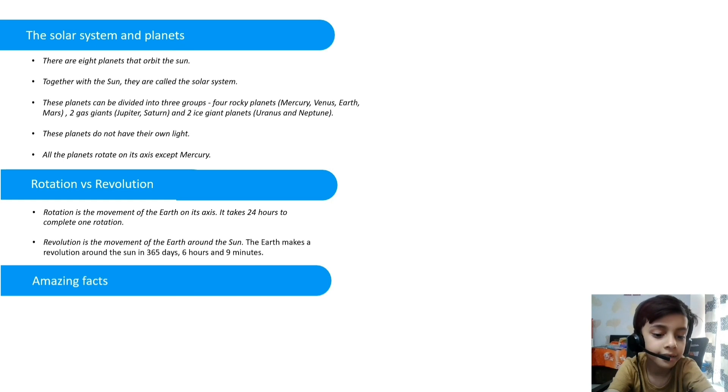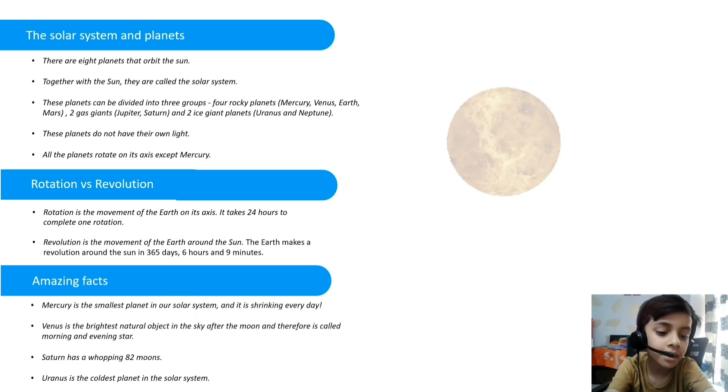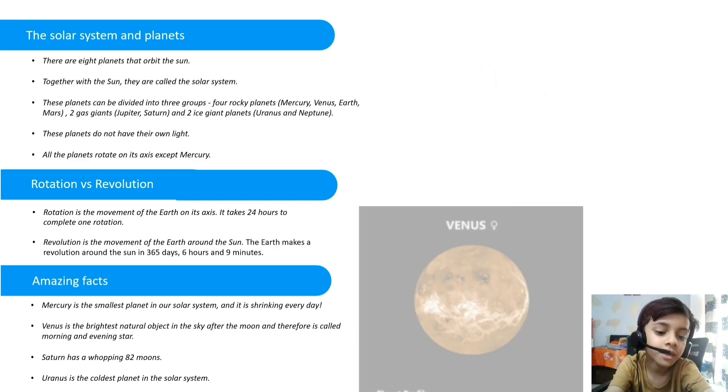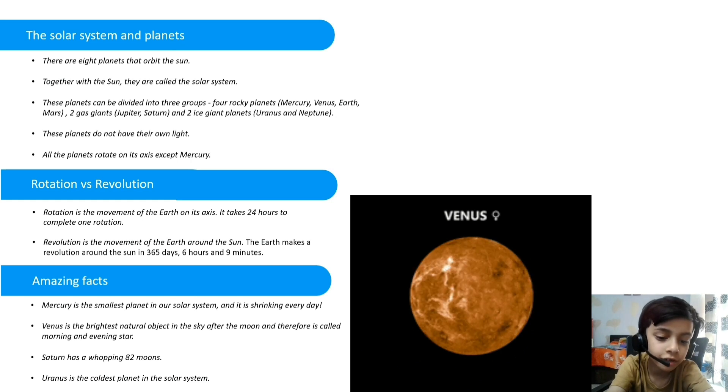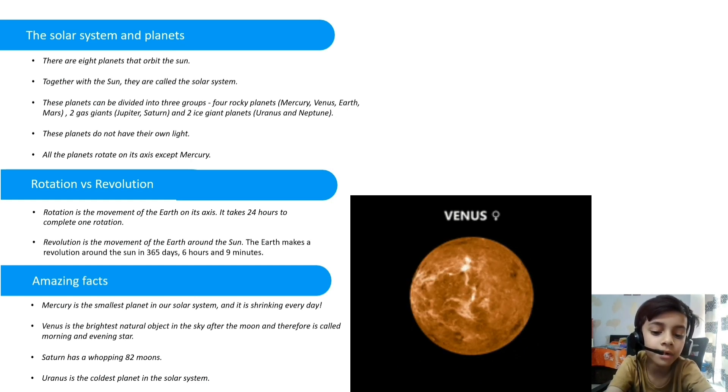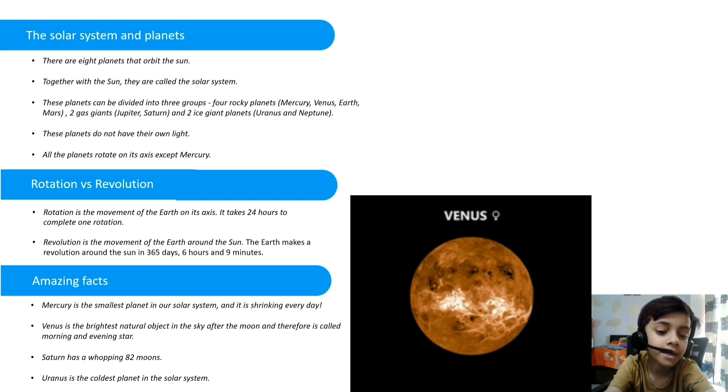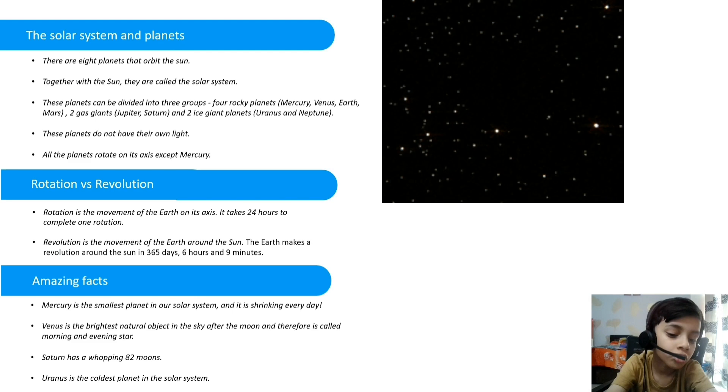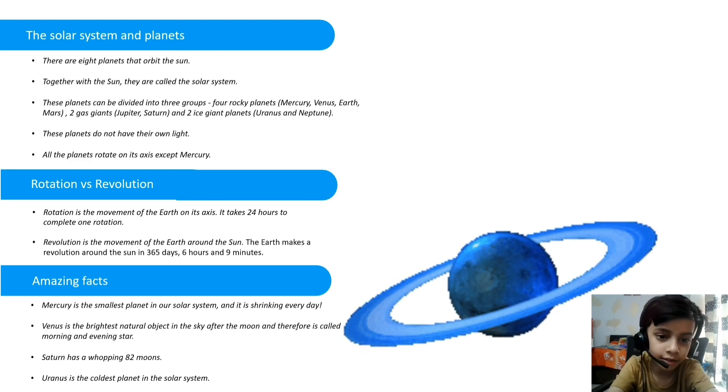Amazing facts: Mercury is the smallest planet in our solar system and it is shrinking every day. Venus is the brightest natural object in the sky after the moon and is called morning and evening star. Saturn has whopping 82 moons. Uranus is the coldest planet in the solar system.